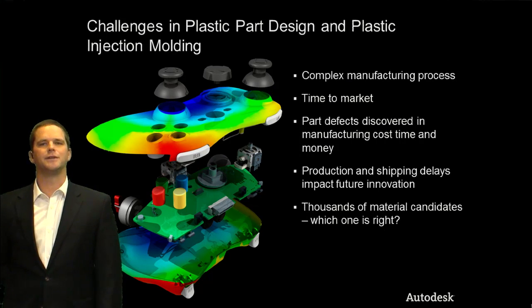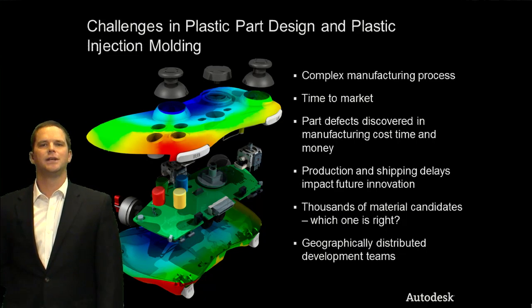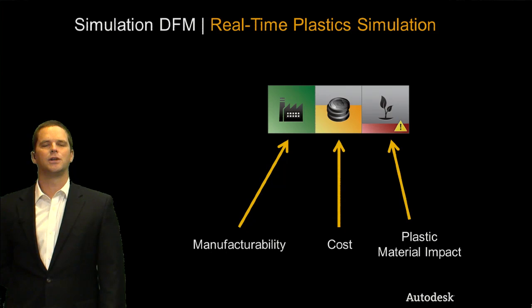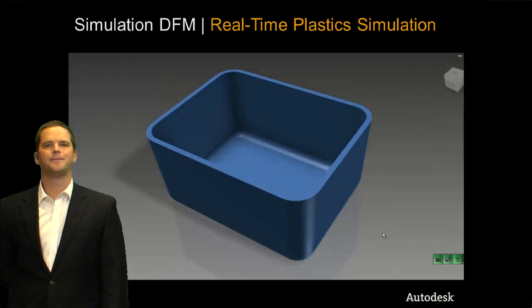There are thousands of material candidates out there now, and more every day, so how do we figure out which one is the correct material for our application? And lastly, especially in larger companies today, geographically distributed development teams are very common. So how are we addressing this with Simulation DFM? It's real-time plastic simulation — it gives you instant real-time feedback on manufacturability, cost, and the plastic material impact on the environment. So let's take a deeper look now with a live look at Simulation DFM.